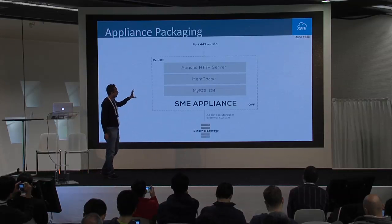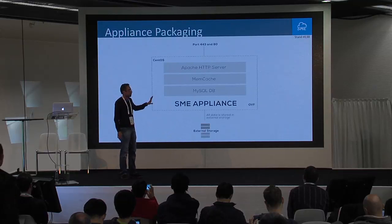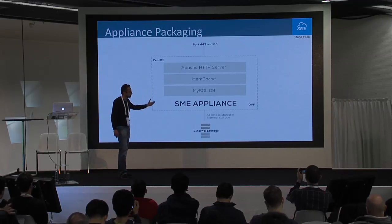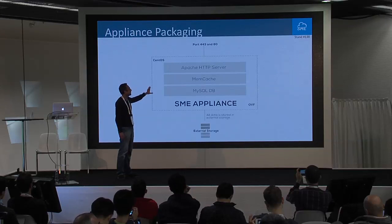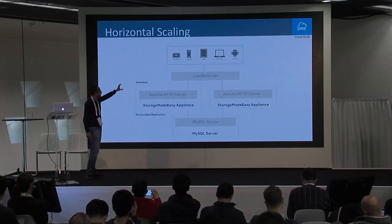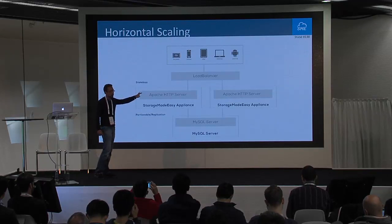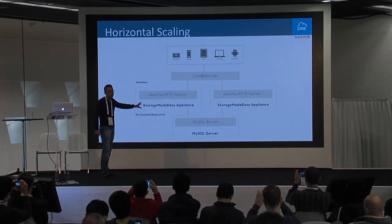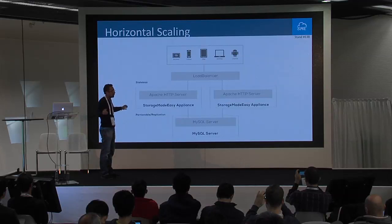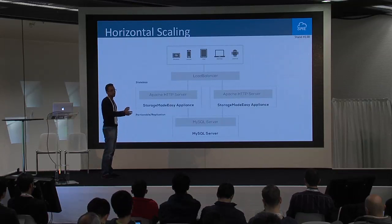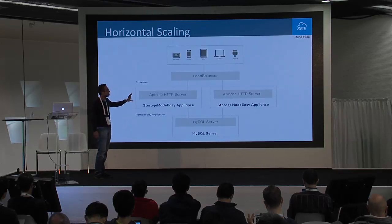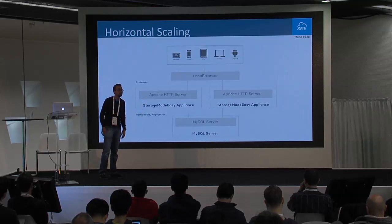An important question is: can you scale? The technology we use is Apache HTTP server, memcache, and MySQL DB, and we provide the appliance in OVF format. We don't use anything that's not well understood by the IT department. If you want to scale out, you can put a load balancer and deploy multiple Storage Made Easy appliances, partition the database where we keep metadata and permissions, and cache file listings for quick access. The Apache servers become stateless — it's a well-understood architecture that you can scale out very easily using your existing knowledge.